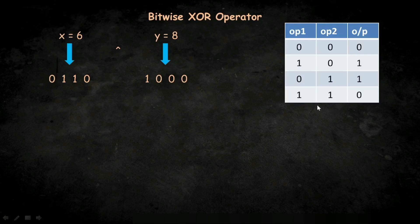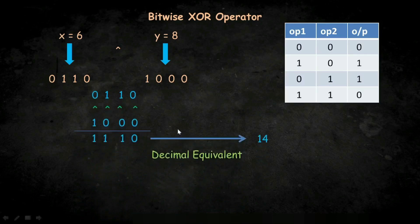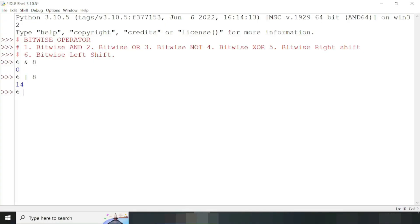Our next bitwise operator is the XOR operator. Here we have the table for the XOR operator. Note that we will get zero as output if the operands are the same — for example, it gives zero if both operands are zero or both are one. We want to perform bitwise XOR on six and eight. Here we have zero XOR zero so the answer will be zero, and finally we get 1110 whose decimal equivalent is 14. If I write six XOR eight and press enter we will find 14 as output.